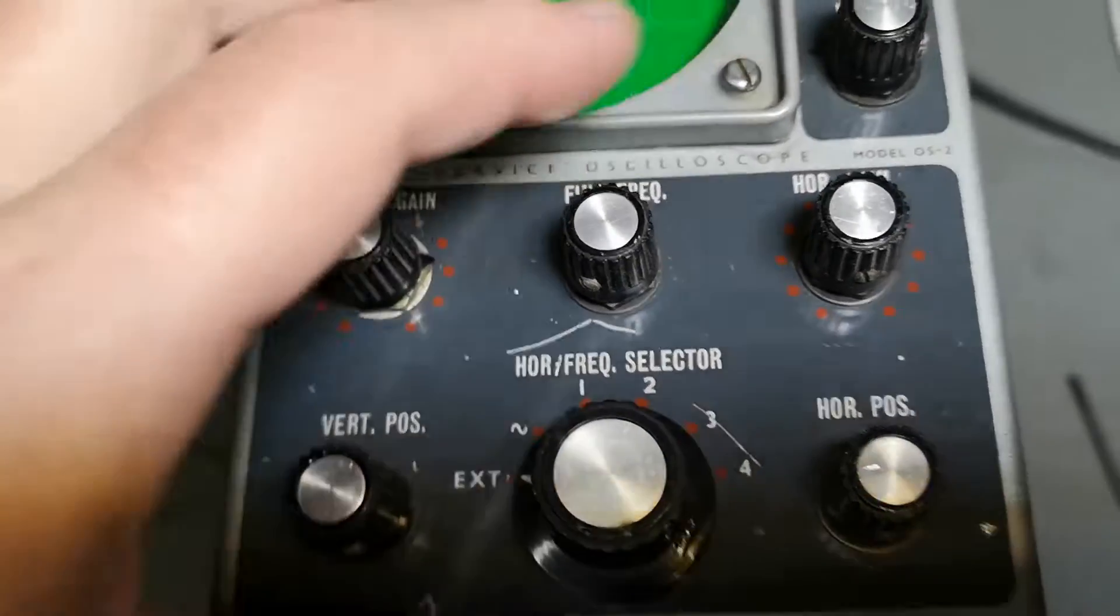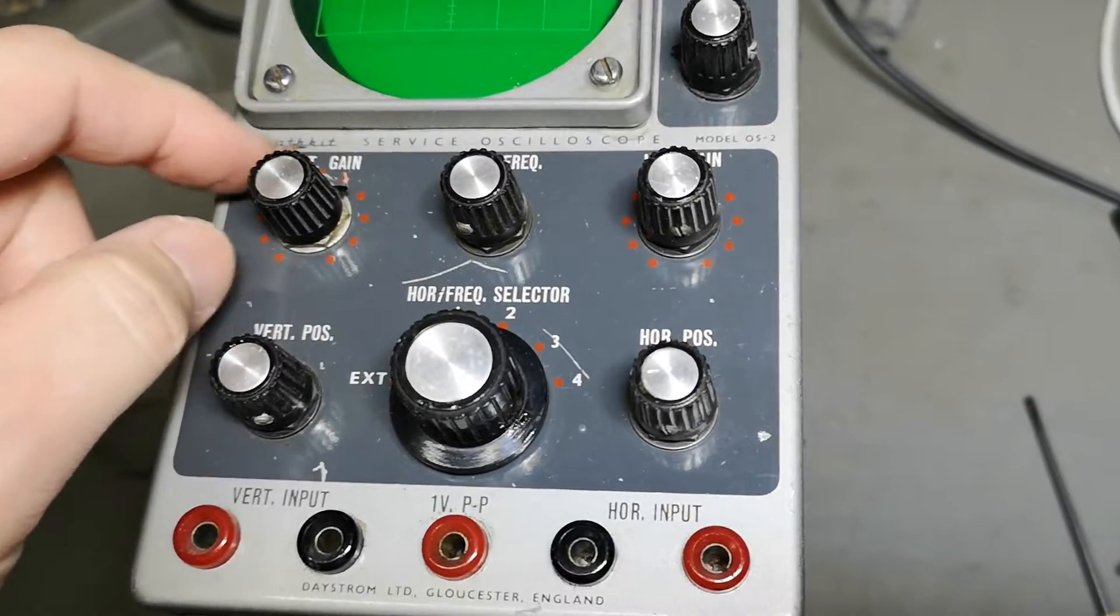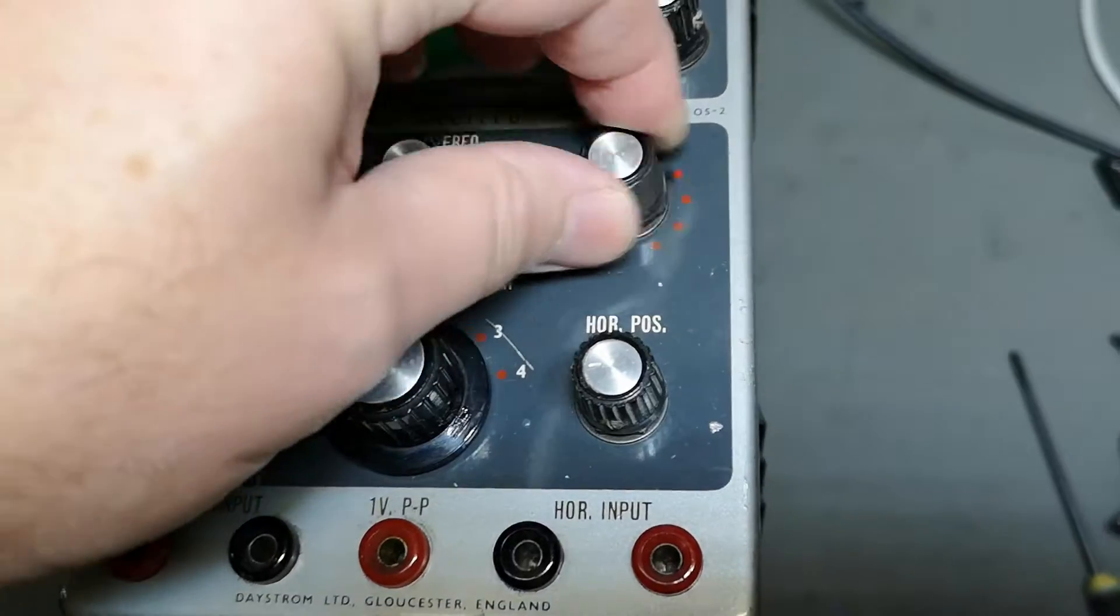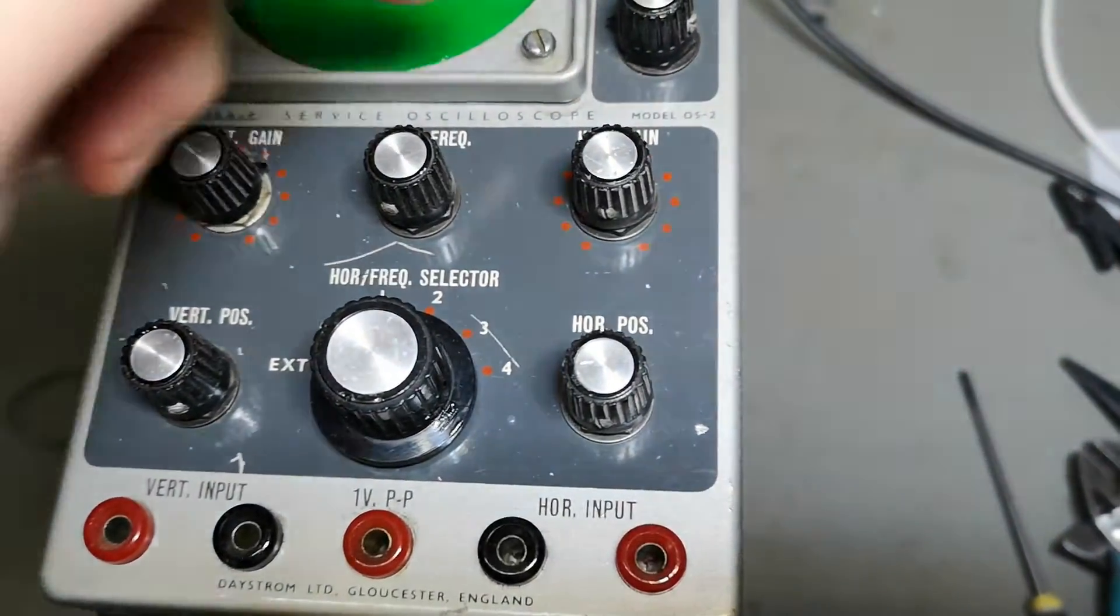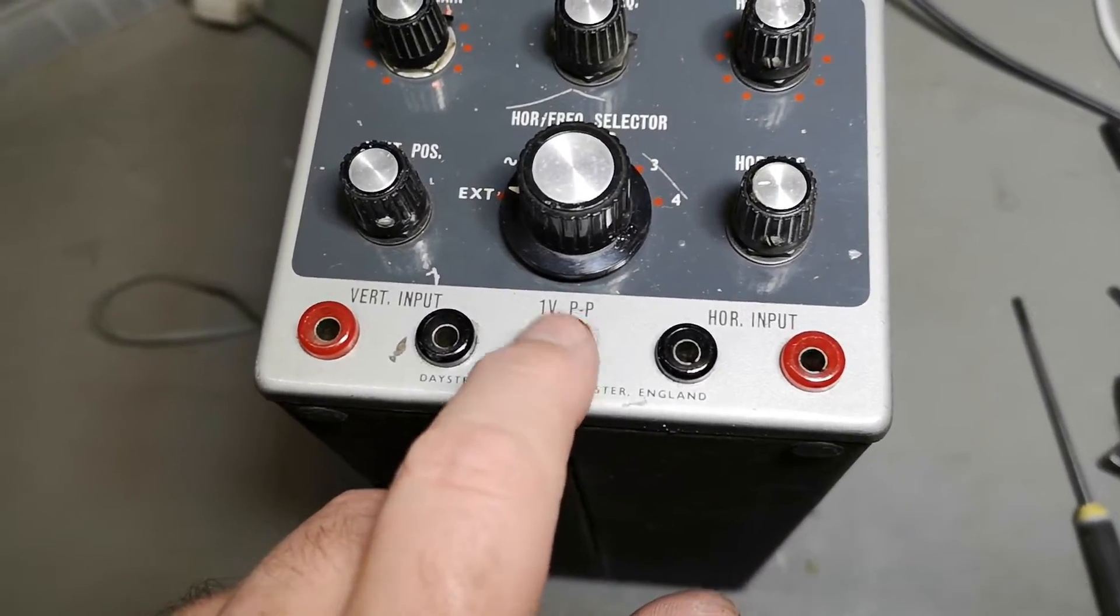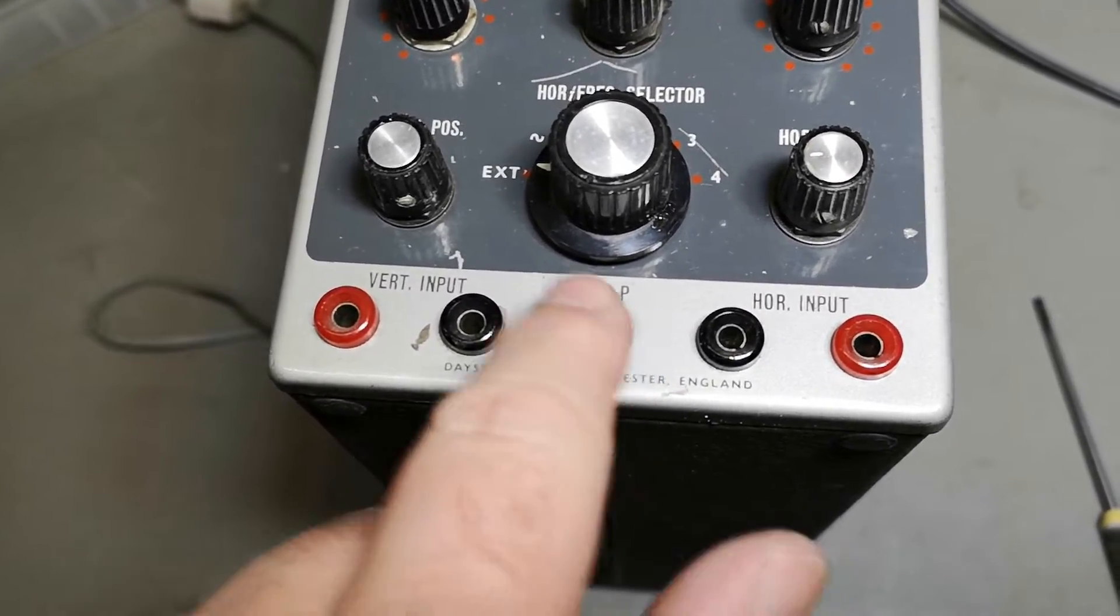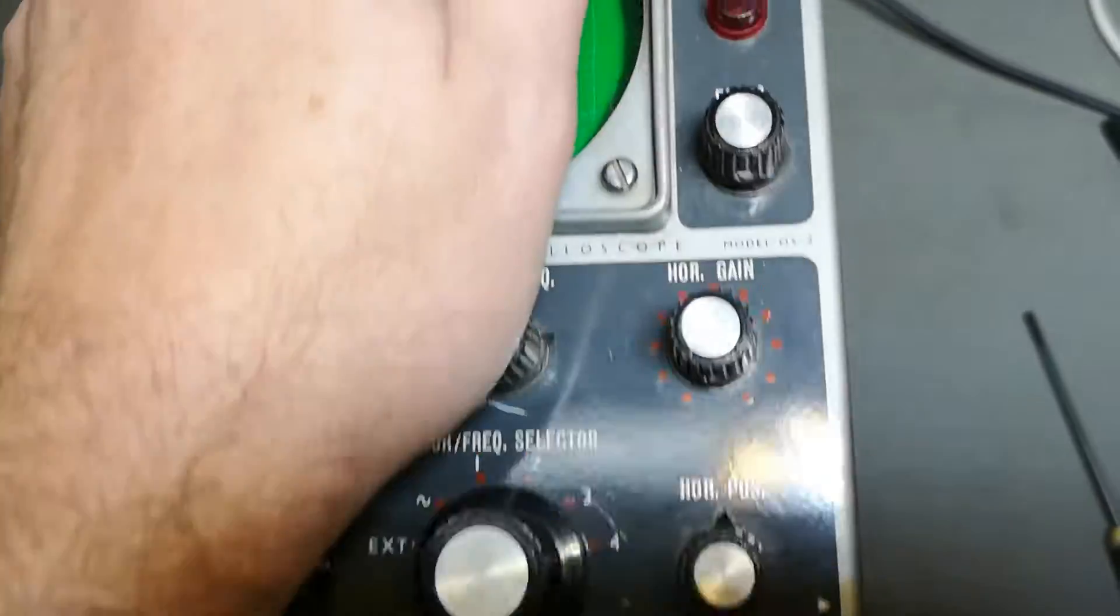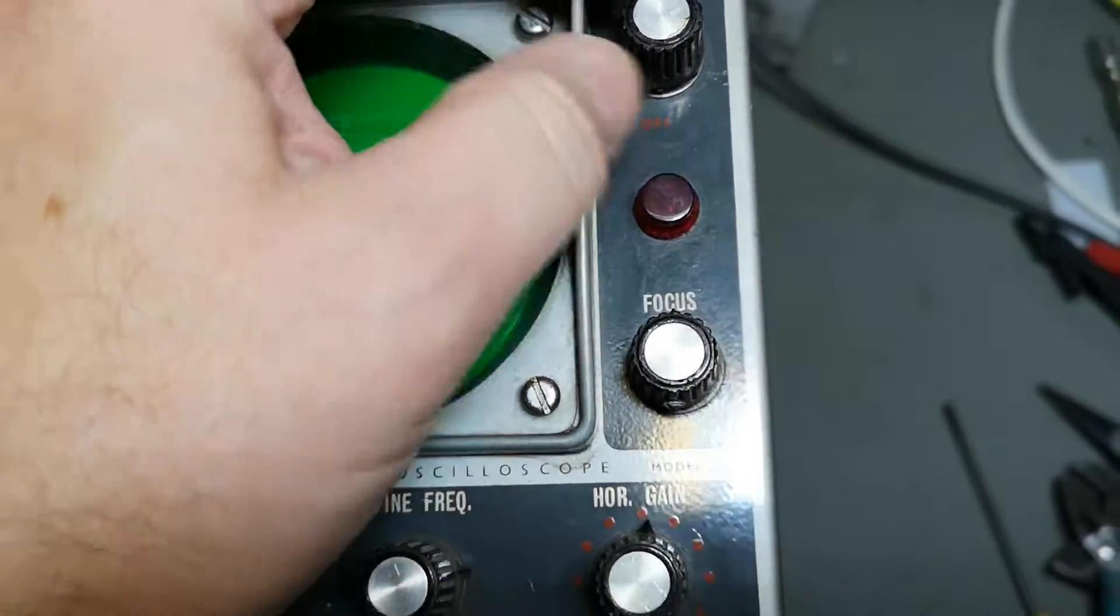If this is the vertical gain, why is the horizontal gain a pot that goes all the way? One volt peak-to-peak. So we got a signal generator in here, so I could probably just connect this one to that one and get a signal. The classic focus and brilliance, so that's brightness, and that is also off.